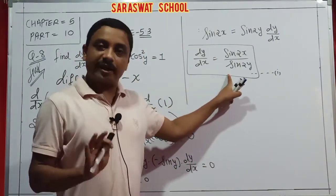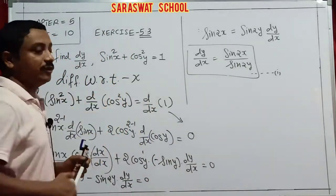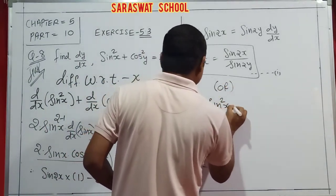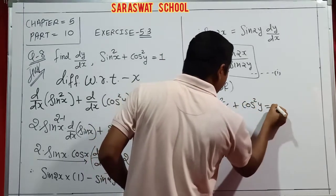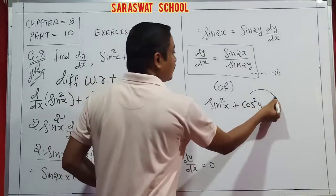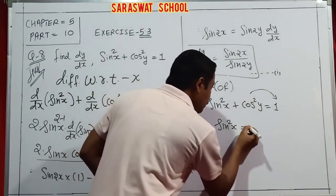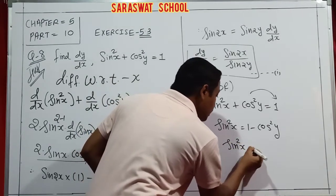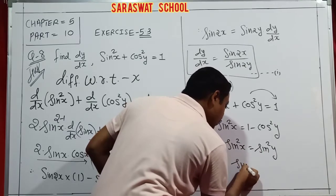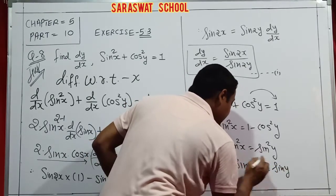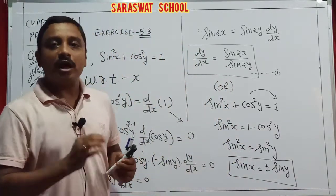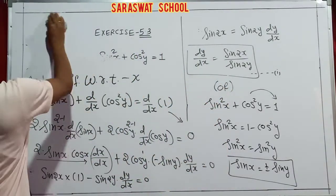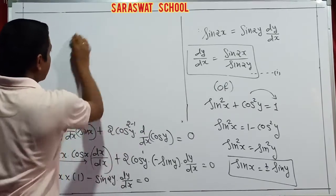Now this answer is correct, but I'll explain this same question again with different approaches. So let's write sin²x + cos²y = 1. If you move sin²x to the right side: sin²x = 1 - cos²y. I'm sure you know that equals sin²y. Taking square root of both sides: sin x = ±sin y. That becomes our equation 2. Now differentiating with respect to x is very easy, but the answer will be different from the first.